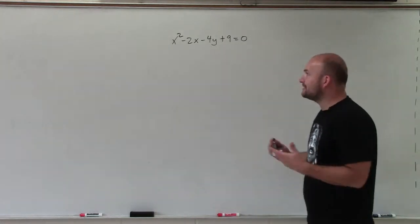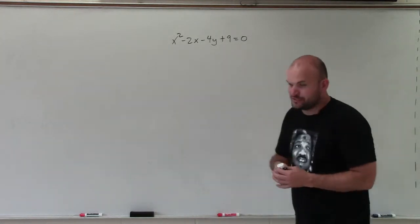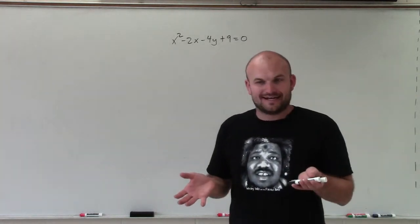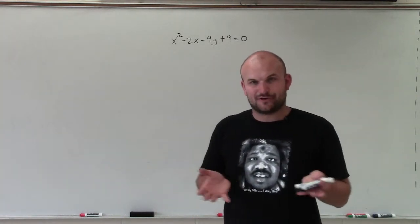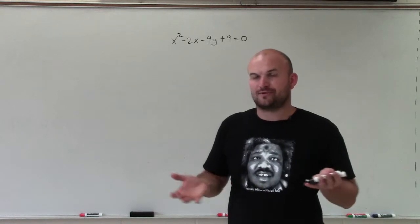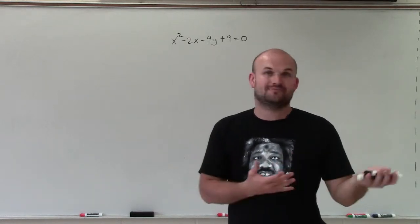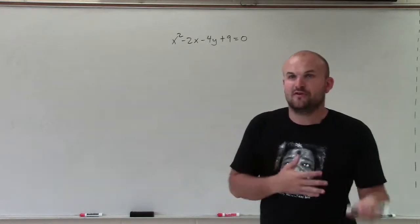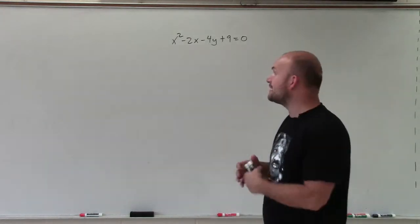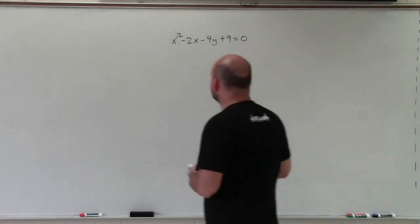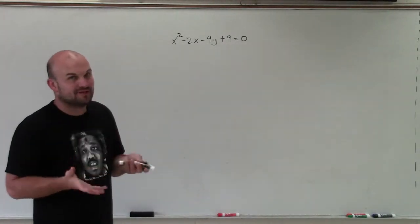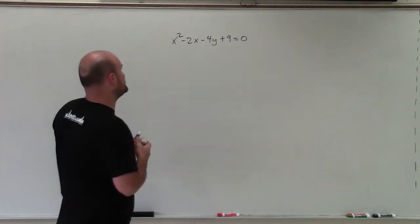To graph this, the first thing we want to do is make sure we have it in a standard form that we know how to graph — determine what the p value is to our focus and our directrix and so forth. So to do that, the first thing we're going to want to do is complete the square.